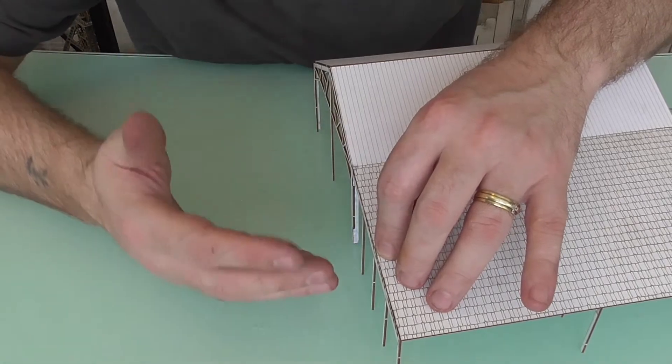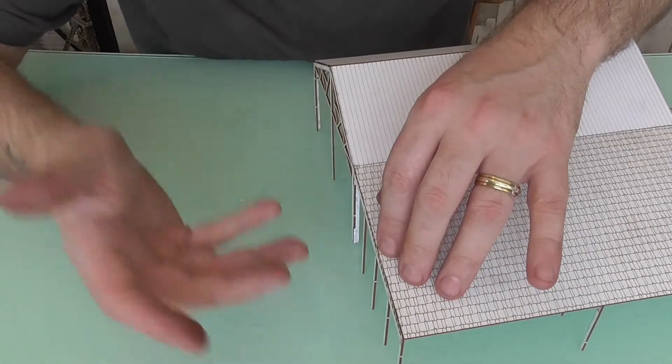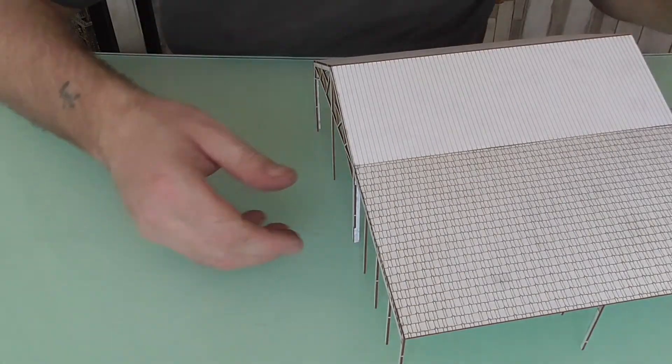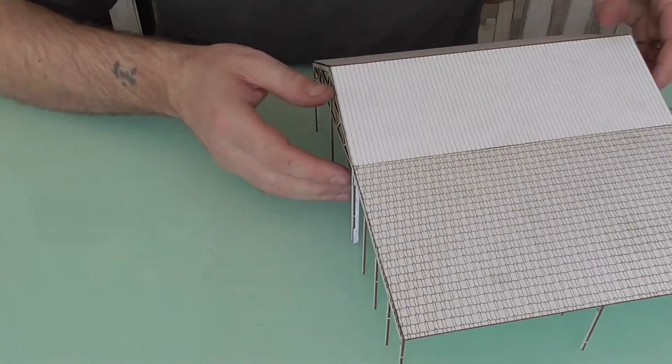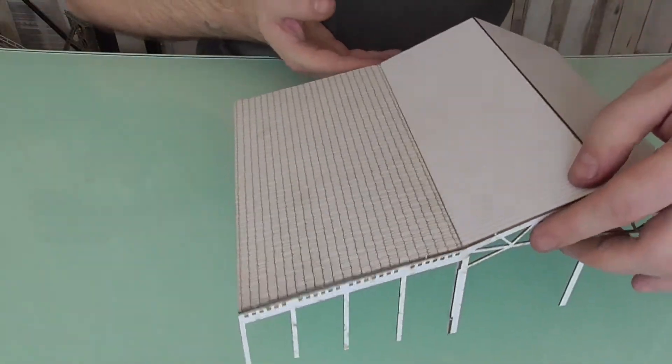See we're not really trying to glue it as such, just tack it for now. Then we flip it over. And that's when we really get the model glued together. But for now, we're just tacking it into place, into where we want it.